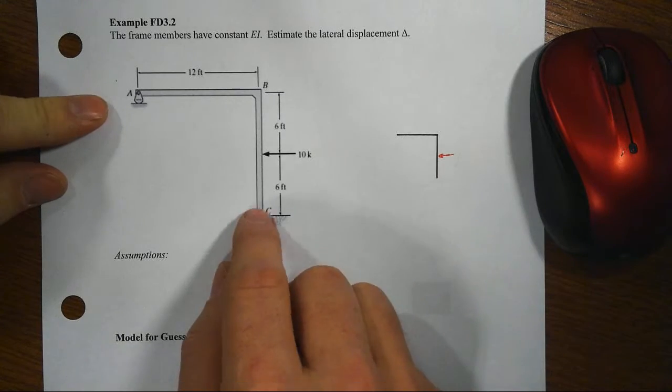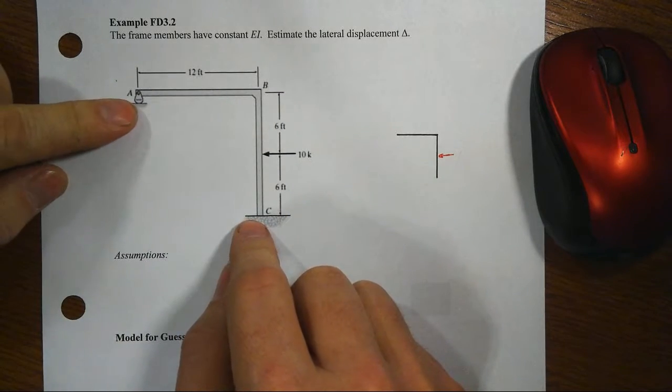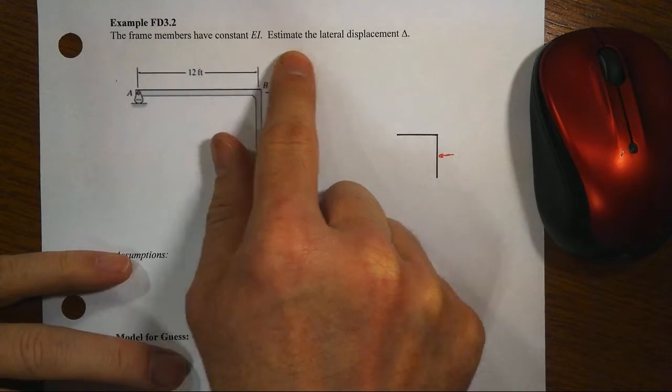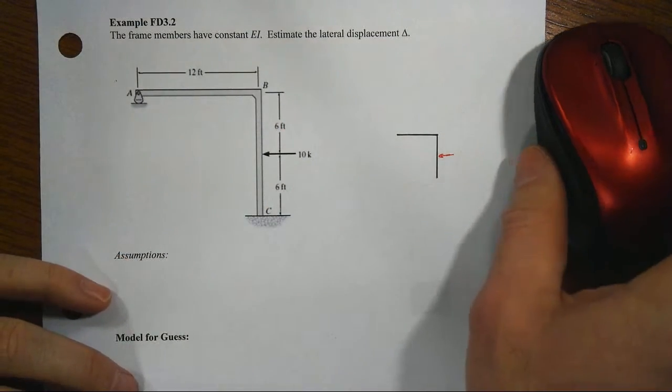In this example we have a frame that has a roller support at A, a fixed support at C. The members we're told have constant EI and we're supposed to estimate the lateral displacement delta.